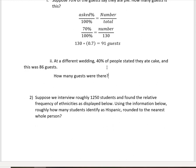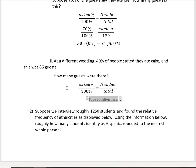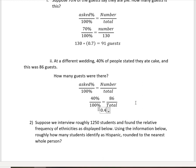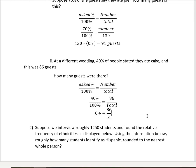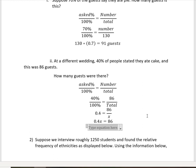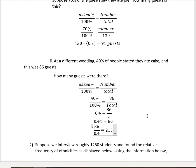At a different wedding, 40% of people stated they ate cake, and this was 86 guests. How many guests were there total? Using the same trick: 40 over 100 equals 86 over x, where x is the total. This simplifies to 0.4 equals 86 over x. Multiplying both sides by x gives 0.4x equals 86. Dividing both sides by 0.4, we get 86 divided by 0.4, which equals 215 guests total.